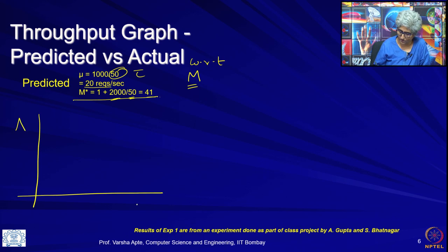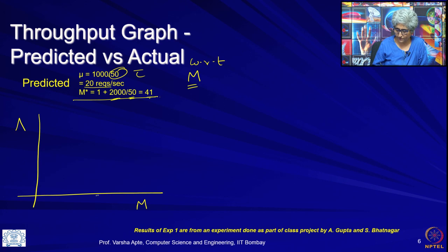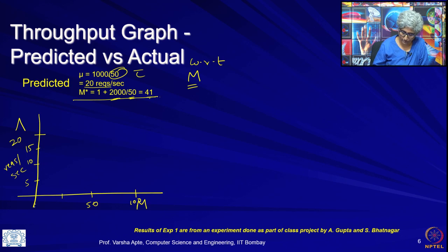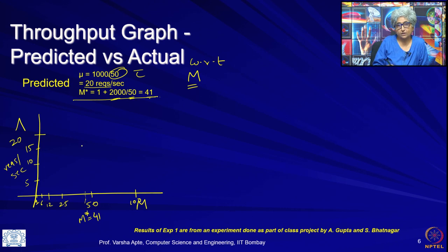Let us draw the throughput graph: this is throughput, this is m. Since saturation is going to happen around m* = 41, we draw the graph up to around 100. The maximum throughput is 20 requests per second. We know that around m* = 41 the throughput starts going toward the maximum, and we can be sure that around there the throughput will be close to 20 requests per second.